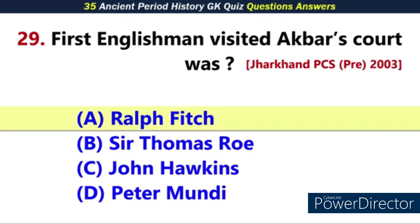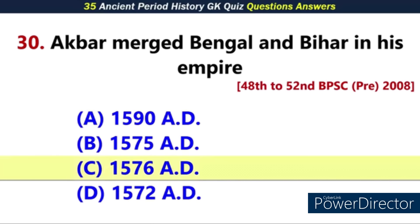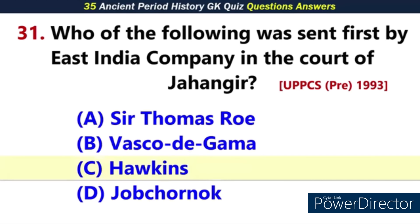Q29. The first Englishman to visit Akbar's court was — Answer: A. Ralph Fitch. Akbar merged Bengal and Bihar into his empire in — Answer: C. 1576 AD. Q31. Who among the following was not received by the East India Company at the port during Jahangir's reign? Answer: C. Hawkins.